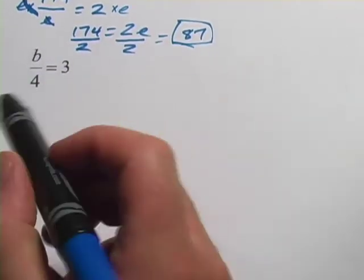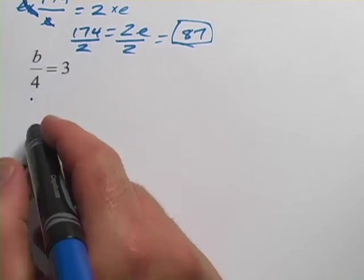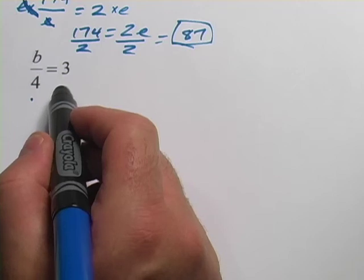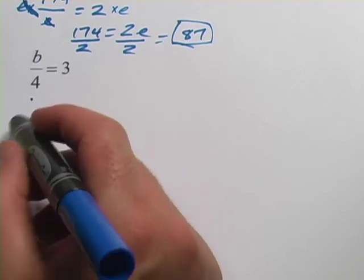Let's look at another one here. This is b divided by 4 equals 3. So what divided by 4 equals 3? You might know in your head, well, 12 divided by 4 equals 3 and that's easy enough.